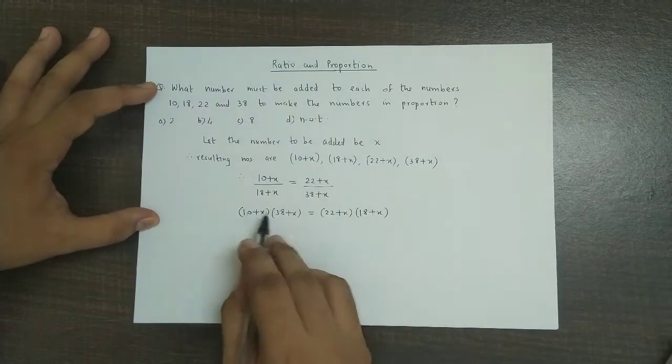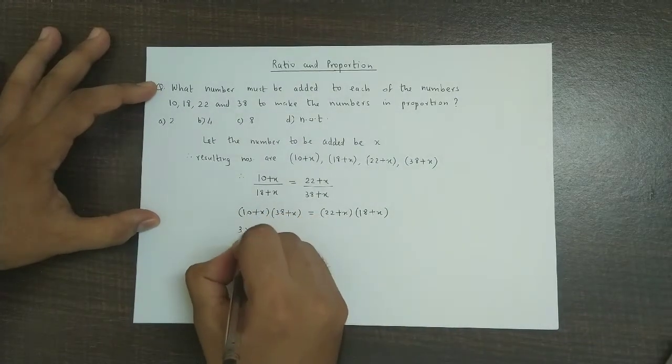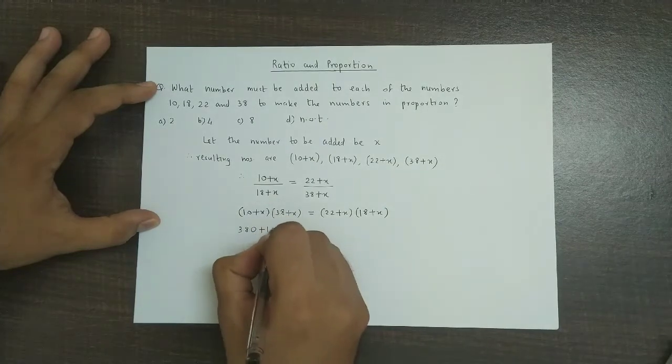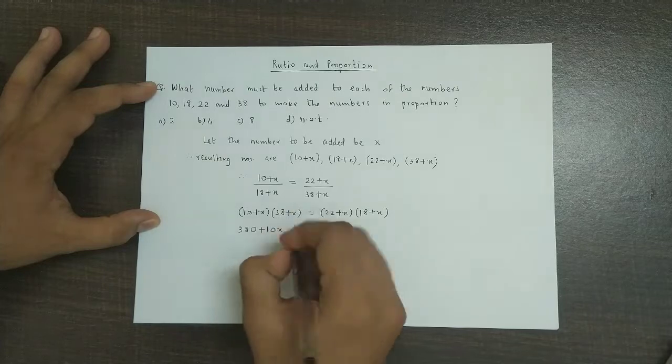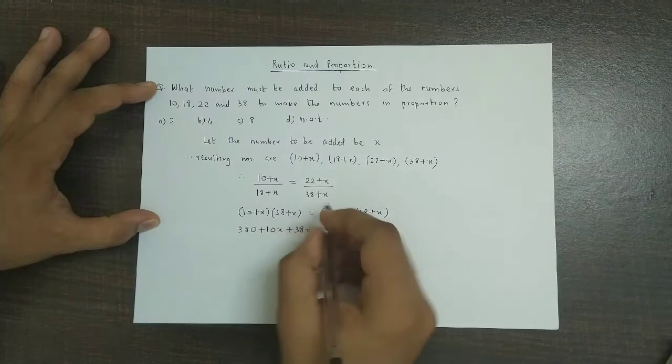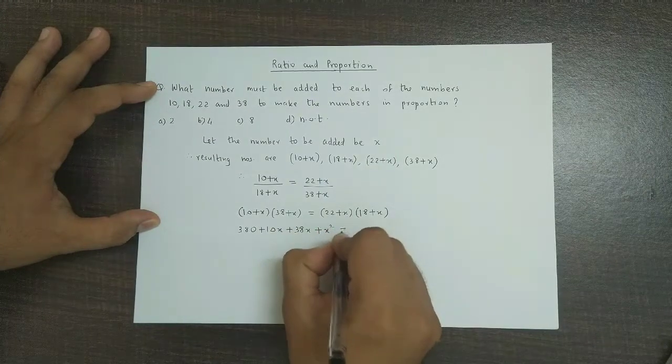So 10 into 38 that is 380, 10 times x is 10x, plus x into 38 is 38x, plus x into x is x square.